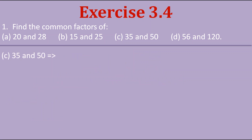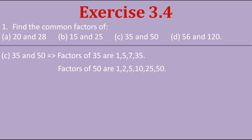Now let's find the common factors of 35 and 50. The factors of 35 are 1, 5, 7 and 35, and the factors of 50 are 1, 2, 5, 10, 25 and 50. Here 1 and 5 are common. So the common factors of 35 and 50 are 1 and 5.